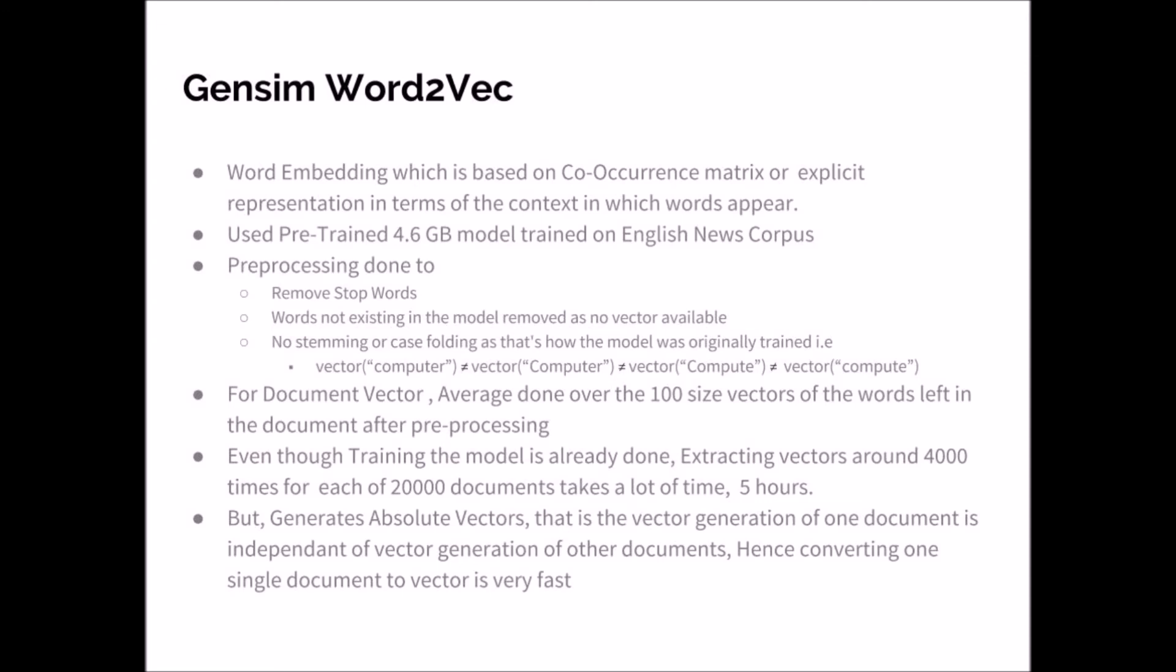That is, given a new document, its vector is independent of other vectors. Hence, vector generation for one testing document will be much faster comparatively.